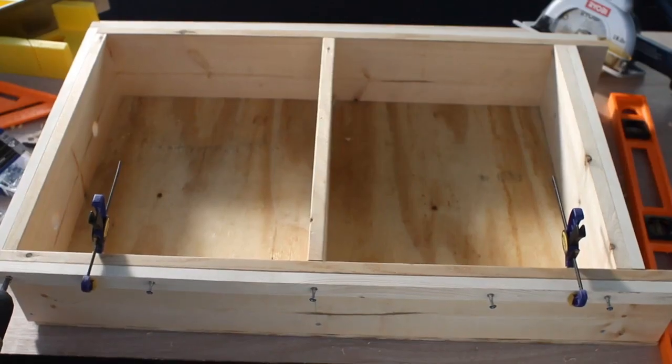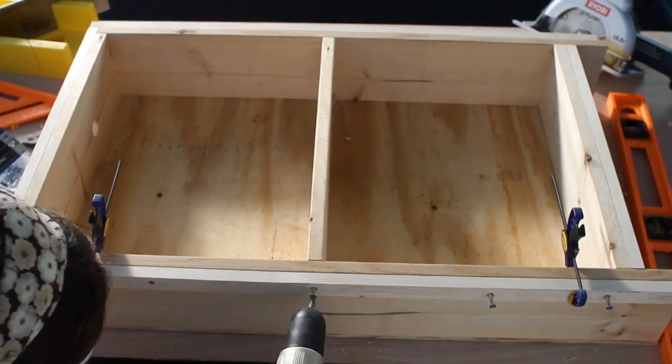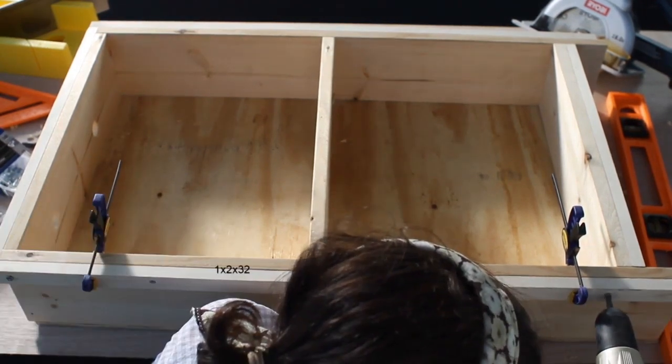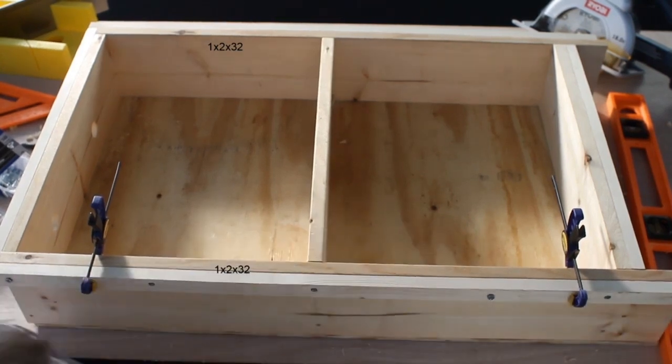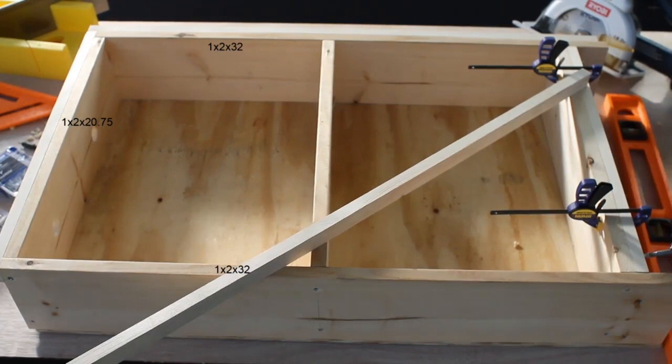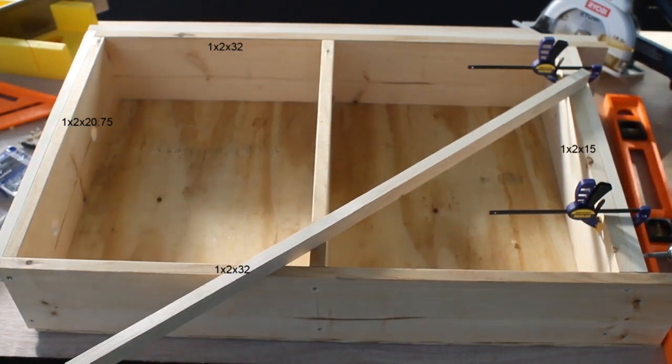Attach the 1 by 2 pieces of white wood around the frame. These will give extra surface area to support the frame, which we'll attach later on. Screw the 32 inch long boards along the long sides, the 20 and three-fourths inch board on the top and the 15 inch one along the bottom, keeping them all flush with the front of the bed.